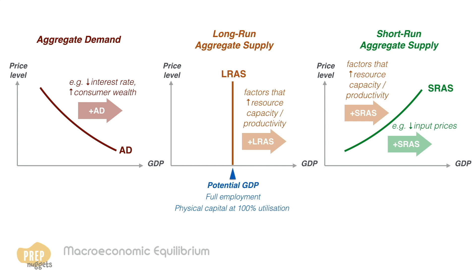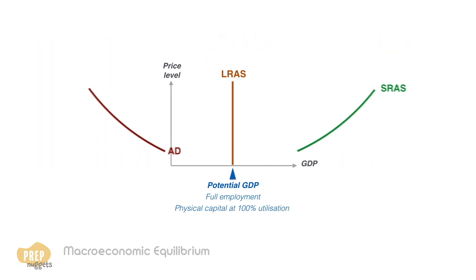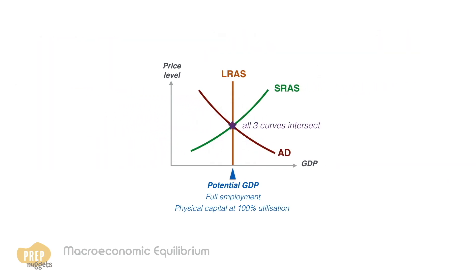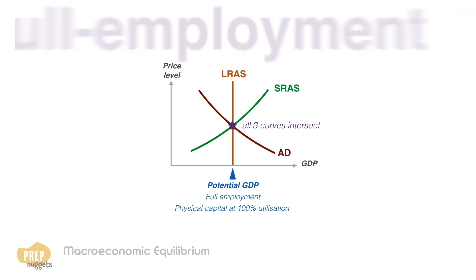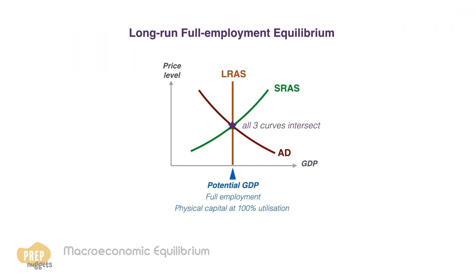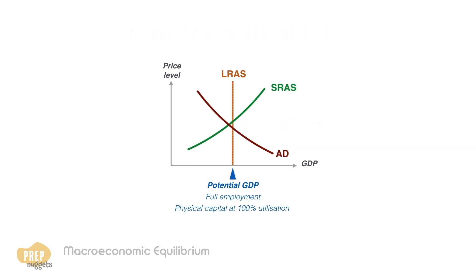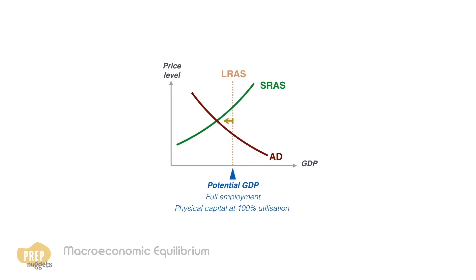Before that, let's start with the long-run equilibrium of the economy. When all three curves intersect at the same point, the economy is said to be in long-run full employment equilibrium. This is the point where the economy is producing at its full potential, where there is no unemployment and all physical capital are operating at full capacity. In reality, economies rarely operate at potential GDP — various factors cause the curves to shift, creating temporary gaps in output.